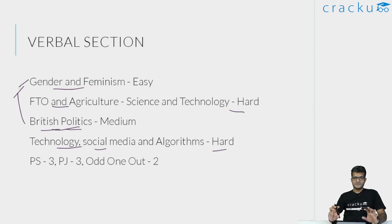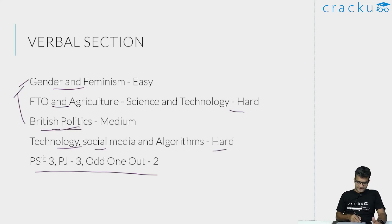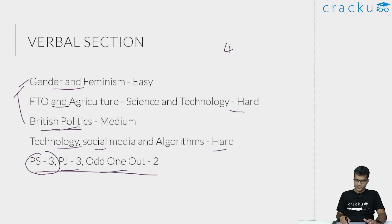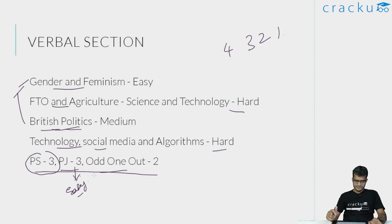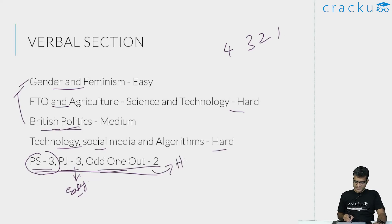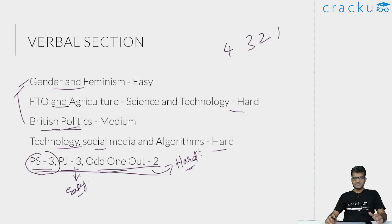Overall, two passages should definitely be attempted and two were slightly on the difficult side. The theme of this section was that verbal ability was definitely on the easier side compared to earlier Dashcats. There were three para summaries, three para jumbles, and two odd one outs. Para jumbles normally give me some difficulty because there are many possible combinations — you are given four lines and can fill them in any order. However, at least one para jumble was very easy with a clear ordering, and the remaining two were medium level. Para summary questions were also not very difficult. Both odd one out questions I found to be on the hard side. Overall, out of eight questions in verbal ability, at least five to six were definitely solvable.